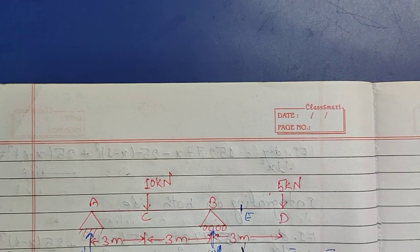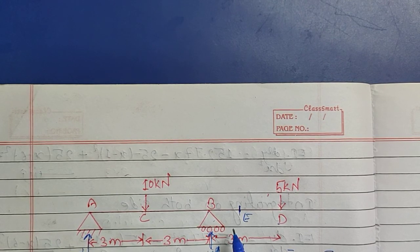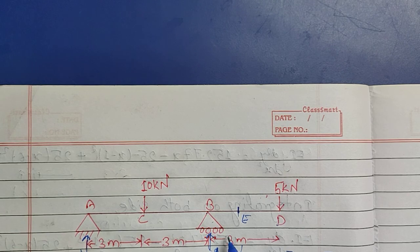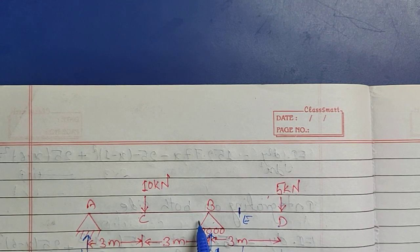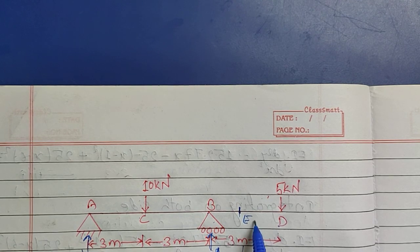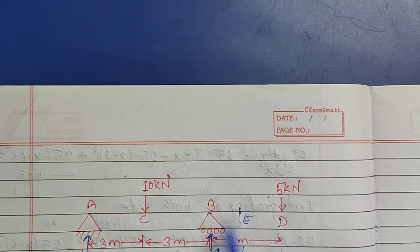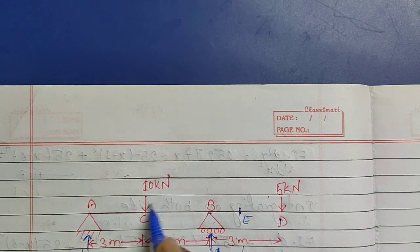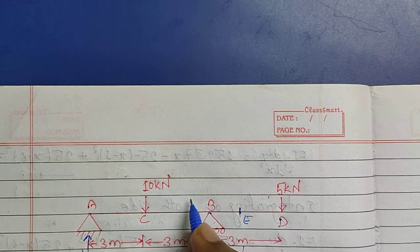Hello everyone, welcome to my YouTube channel Civil Learning Online. Today in this video I will be discussing the Macaulay's method, and this is going to be the third type of numerical. In the given equation, I have selected a span which is overhanging and simply supported at two points A and B. D is overhanging, and span AB carries a point load of 10 kN at mid span.